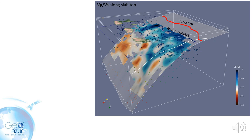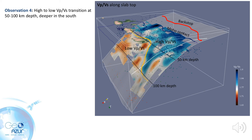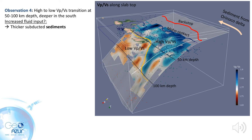The lateral variability is particularly visible in the Vp/Vs ratio. The shallow part of the slab has a high Vp/Vs ratio, and the deeper part has a lower Vp/Vs ratio. The transition between these two zones is quite rapid, and is observed at 50 km depth in the north, and at 100 km depth in the south of the study area. In the south, the transition is also more gradual. We could infer that there is a deeper or greater water transport in the south. A possible vector for that extra water might be a thicker layer of subducted sediments, since the incoming sediments at the trench are much thicker in the south because they are derived from the South American continent, and the Orinoco Delta in particular.